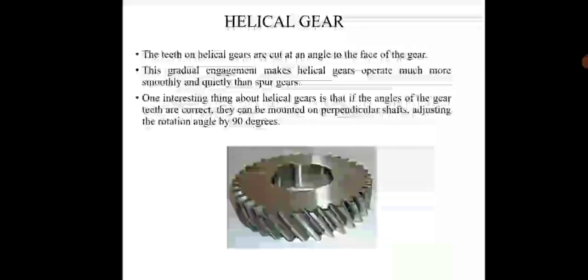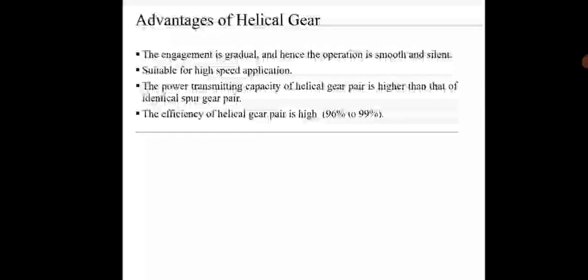Helical gears: The teeth on helical gears are cut at an angle to the face of the gear. This gradual engagement makes helical gears operate more smoothly and quietly than spur gears. One interesting thing about helical gears is that if the angles of the gears are correct, they can be mounted on parallel shafts adjusting rotation by 90 degrees. The advantages of helical gears: The engagement is gradual and hence the operation is smooth and silent. Suitable for high speed applications. The power transfer capacity of helical gears is higher than that of an identical spur gear pair. The efficiency of helical gears is high, which is up to 96% to 99%.